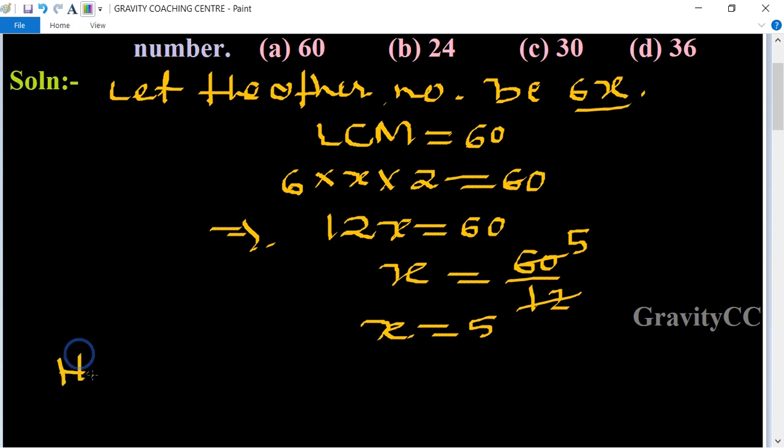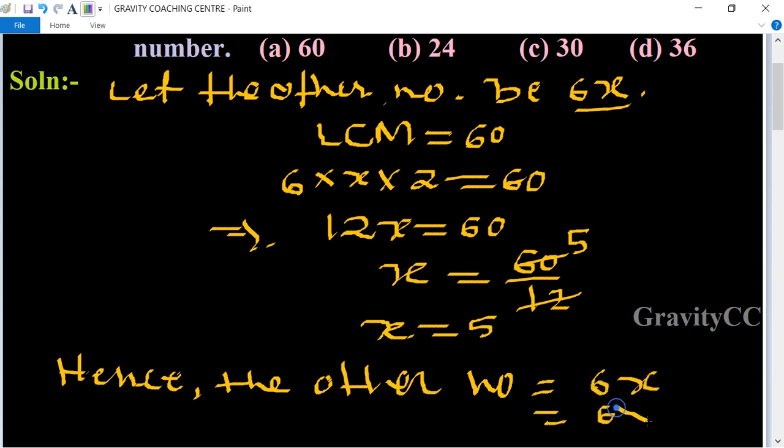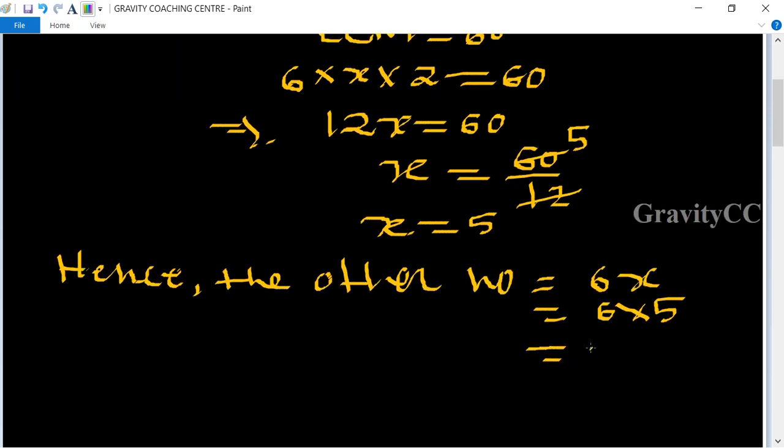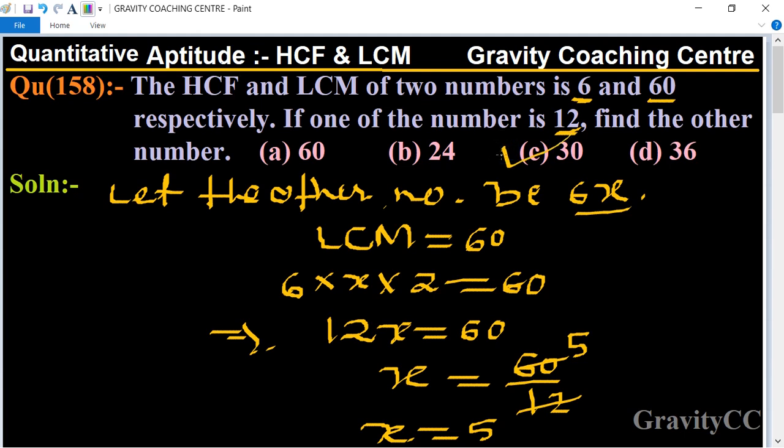Hence, the other number equals 6x = 6 × 5 = 30. So option C is the right answer.